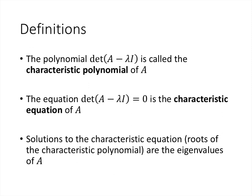A bit of terminology: when we take the determinant of A minus lambda I, leaving lambda as a variable, what we get is called the characteristic polynomial of A. It's always a polynomial, and its degree always equals the size of the square matrix A. When we set that characteristic polynomial equal to zero, the resulting equation is called the characteristic equation of A. Its solutions — the roots of the characteristic polynomial — are the eigenvalues of A.